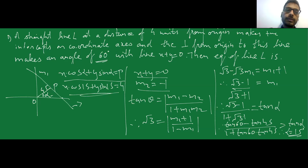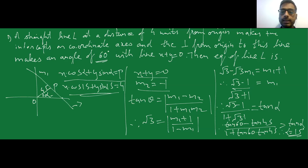To recap the method: the straight line is at a distance of four units from the origin — perpendicular length is 4 — making positive intercepts on the coordinate axis, so it cuts on the positive sides of x and y. The perpendicular to this line makes an angle of 60 degrees with another line. The other line's slope is minus one, and we use the angle between two lines formula with tan(θ).